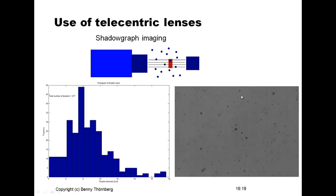The captured image shows a bright background with small dark dots corresponding to water droplets in air. The histogram on the left side shows the diameter of the droplets in micrometers on the horizontal axis and the frequency of occurrence on the vertical axis. This demonstrates how a shadow graph imaging system equipped with a telecentric lens can measure the size distribution of water droplets in air.